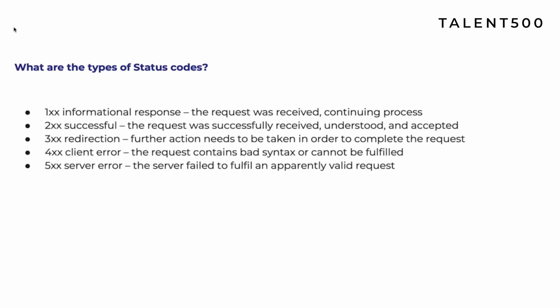The 4xx series is client error — you will deal with this frequently in API testing. It basically means something went wrong on the client side. For example, if you're sending a request to create a student but forget to provide the student name, you'll get a 4xx error. Similarly, if the username and password are incorrect, that is also a client error.